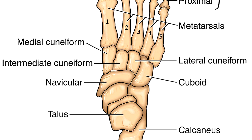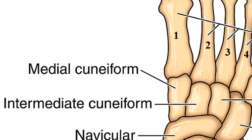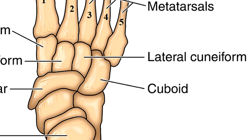Next we have three bones called cuneiform bones that start on the medial or big toe side of the foot and work their way over in a row of three. Their name comes from a Latin word meaning wedge-shaped. All three are named something cuneiform, so knowing your directional terms gives you the first word of each name. First is the medial cuneiform on the big toe side, then the intermediate cuneiform in the middle, and then the lateral cuneiform toward the outer side of the foot.